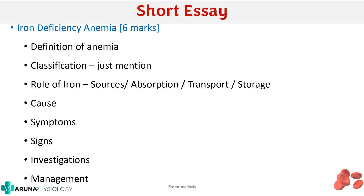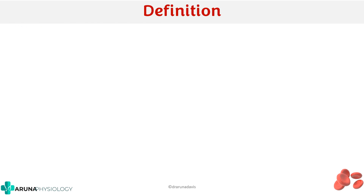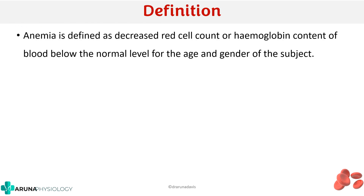Anemia is defined as a decreased RBC count or hemoglobin content of blood below the normal level for the age and gender of the subject. All these components are important — it is not just simply a decreased RBC count or decreased hemoglobin. You also have to mention the age and gender of the subject, because what is normal for males might not be normal for females.